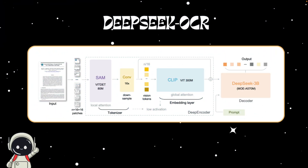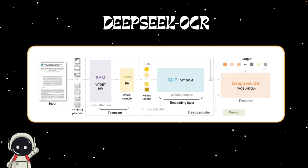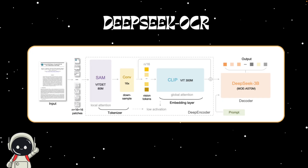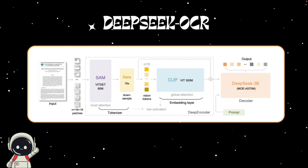The secret is in the Deep Encoder, their custom vision encoder built specifically for high-resolution documents. It combines three major components: SAM (Segment Anything Model) for perception and understanding fine local details; CLIP Large for global semantic knowledge — the broader layout and meaning; and a 16x token compressor which reduces the number of visual tokens by a factor of 16. This compresses a 1024×1024 document into just 256 vision tokens while keeping its structure intact. The model supports multiple modes — tiny, small, base, large, and even Gundam mode for ultra-high-resolution images like newspapers or PDFs.